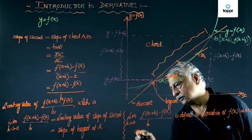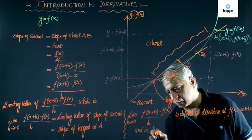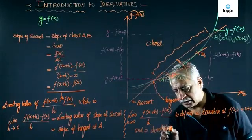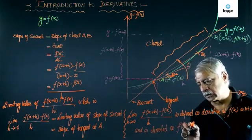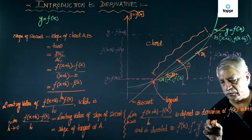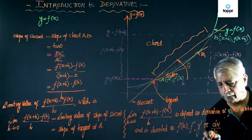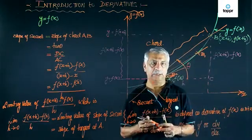And is denoted as f dash x, or f dash, or y dash, or dy by dx. This is the concept of derivatives.